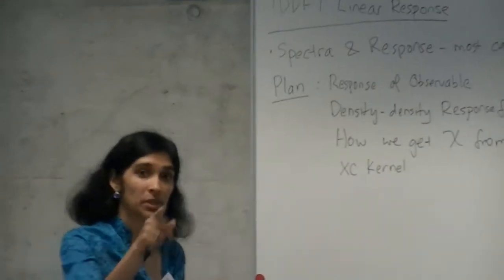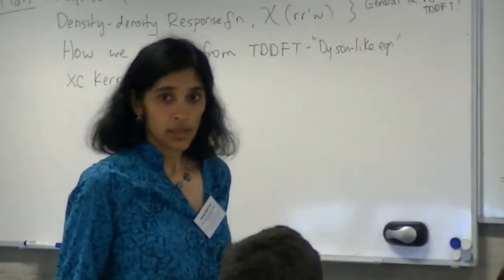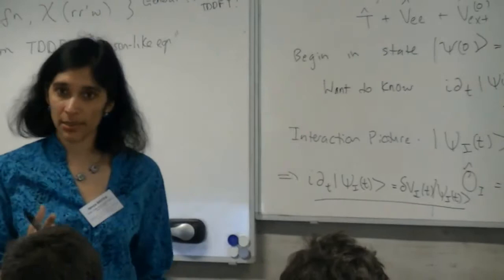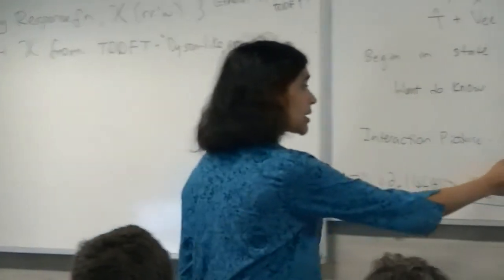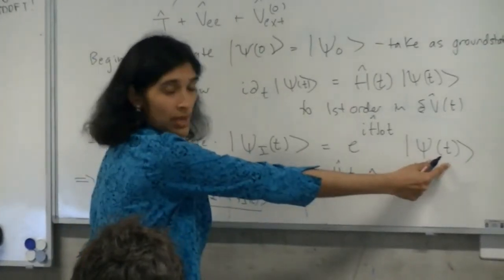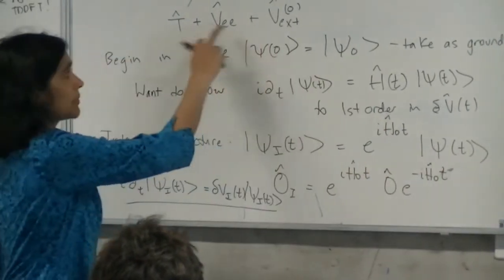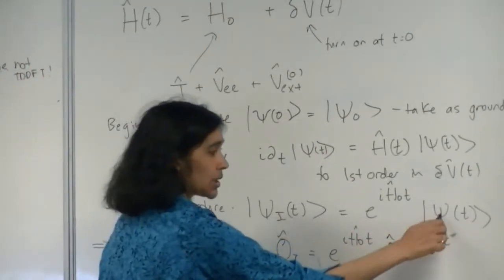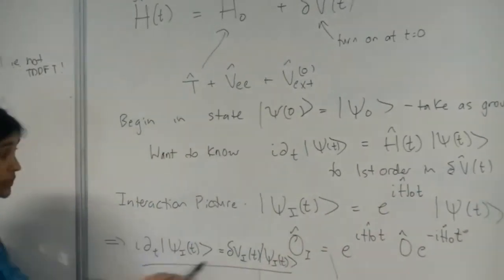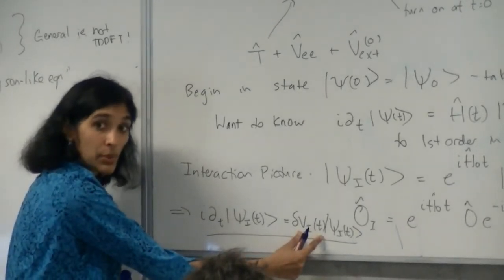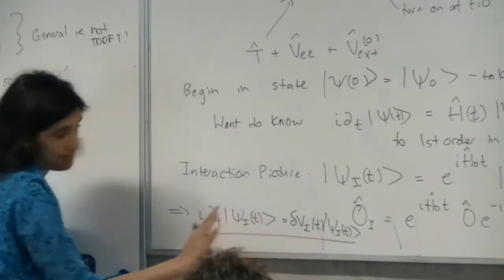When we plug this into the equation, we get a simpler equation for the interaction picture wave function, which is simply delta v in the interaction picture times psi i of t. So we've almost gone past this step. We now need to turn this into a response of an observable. In quantum mechanics — Schrödinger picture, Heisenberg picture — here we define an interaction picture where we eliminate the free evolution due to H zero from the Schrödinger picture wave function.